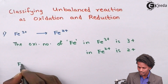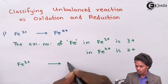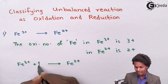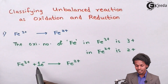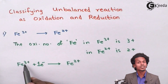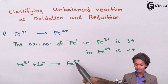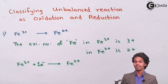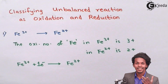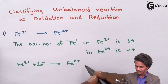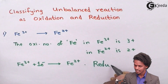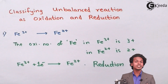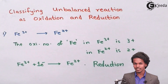Fe³⁺ will only be converted into Fe²⁺ if it accepts an electron. If it accepts one electron, the +3 oxidation number will be converted into +2. Since it is accepting an electron, and acceptance of an electron is reduction, the overall reaction is a reduction process. So this was the first example.